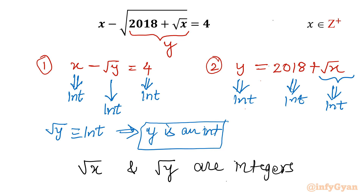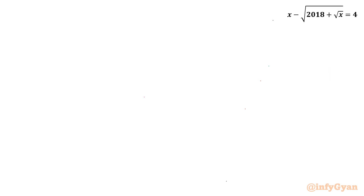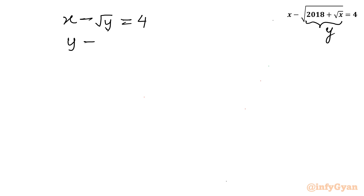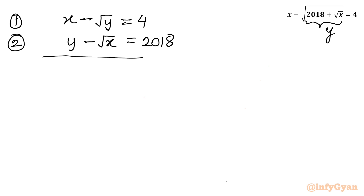Now I will use equation 1 and equation 2. Equation 1: x minus √y = 4. And using the substitution for y, I will write equation 2 as: y minus √x = 2018. This is equation 1 and this is equation 2.